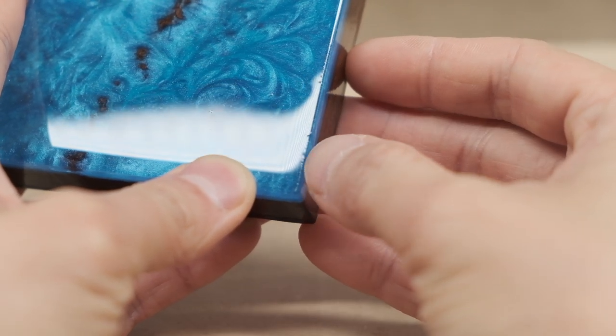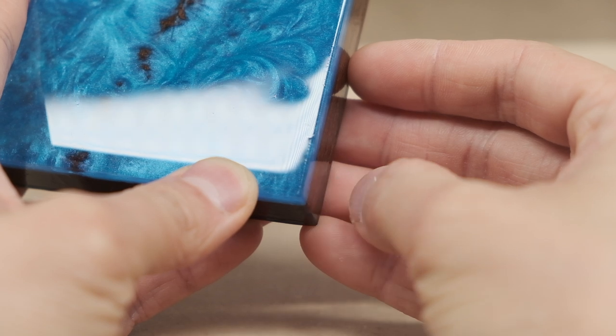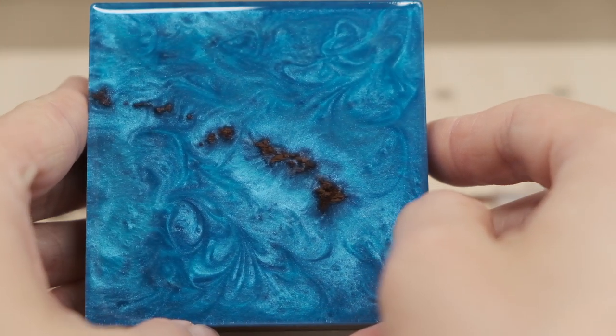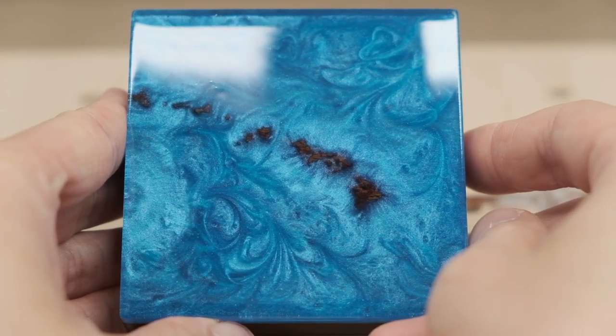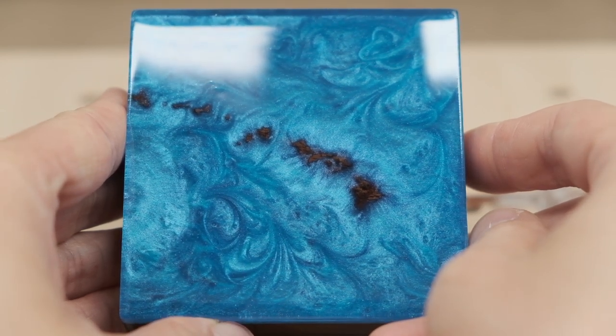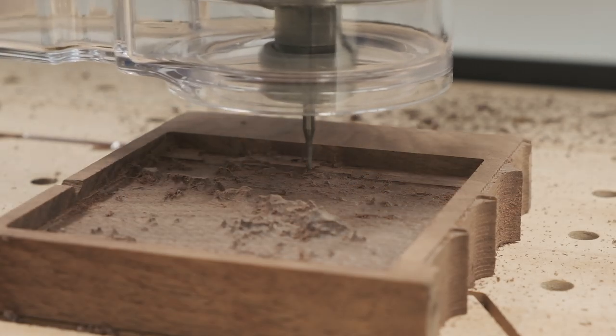But other than that mistake and a couple small air bubbles I introduced in the second pour, I was pretty happy with the overall result. I did later mill some material off the bottom to thin out the piece, but even without that, this proof of concept piece looked great on a desk.